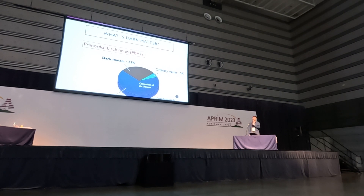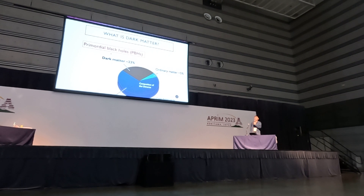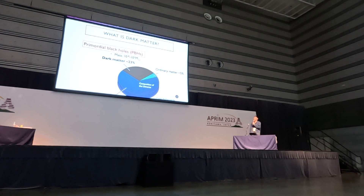So far, astronomers have a solid idea of what dark matter is. They don't know the nature of dark matter, but they kind of know what it is. They also don't know the fraction of each candidate in dark matter. There is a very interesting candidate called primordial black holes, PBH. Astronomers kind of know the mass range of it, which is 10 to the minus 8 to 10 to the power solar mass, but they don't know the fraction of it in dark matter.